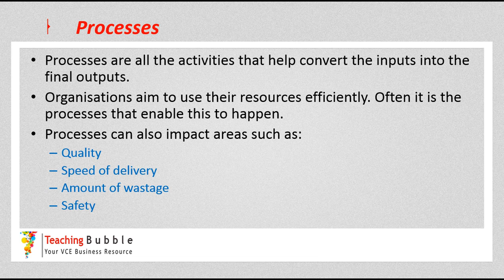Processes can help determine areas such as quality, the speed of delivery — which is again often why technology is implemented into the operation system — and the amount of wastage. Sometimes really good processes reduce the amount of wastage, whereas poor processes could mean wastage everywhere, which in the end costs you money and makes it more expensive to produce your product. Processes also have a really profound impact on the safety of the organization.